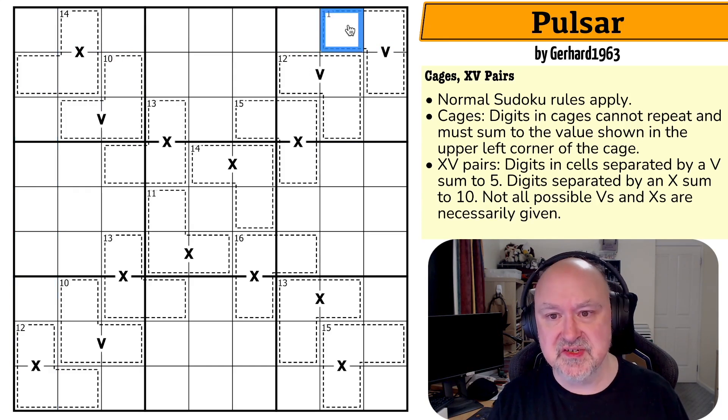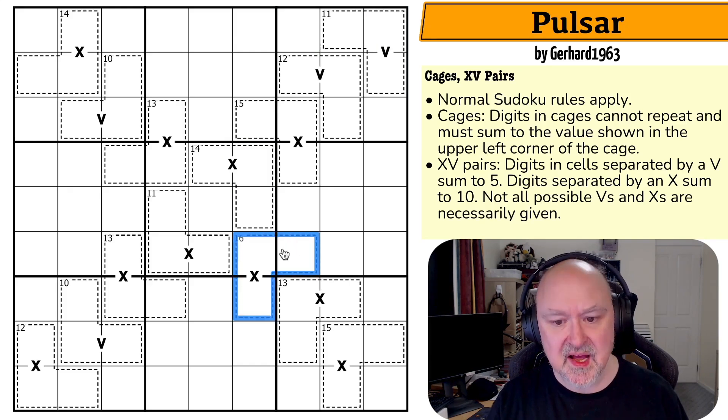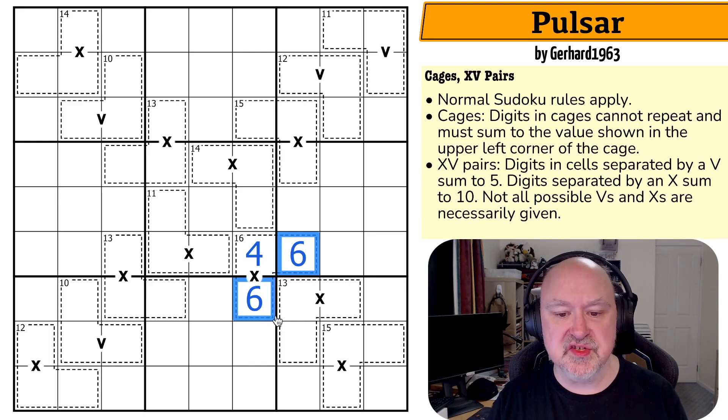We've then got cages. Digits in cages cannot repeat and must sum to the number in the top left corner of the cage. So we know those three digits sum to 11, these three digits sum to 14, these sum to 16. For example, we couldn't do the 16 with two sixes and a four because that would repeat the sixes in the cage. Even though these do not see each other by Sudoku, you cannot repeat digits in a cage.